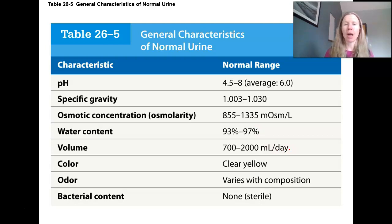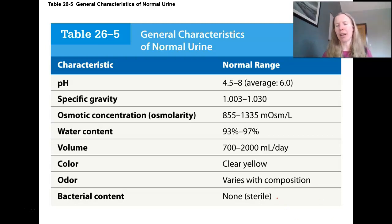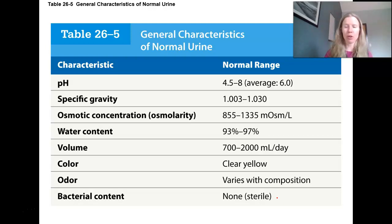Depending on your water balance, urine volume varies. It should be a light yellow and clear. If it's very dark, that's a good indication you're probably dehydrated and should consume more water. Odor varies with composition — the classic example being asparagus. Urine shouldn't have bacteria that would cause infection, though more studies show there may be some we just get along with fine. This is important for urinalysis — patients need to clean properly before providing a urine sample so we see what's actually in the urine, not what was in the urethra.